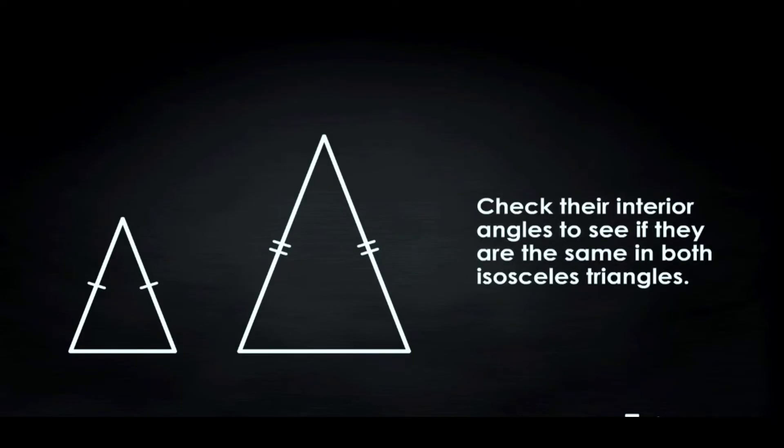Here we have two isosceles triangles, one with sides twice as long as the other. Are they similar? To determine if they are similar, you have to check their interior angles to see if they are the same in both isosceles triangles. Recall that the equal sides of an isosceles triangle are called legs. In this case, the corresponding angles between the legs and third sides are congruent at 71 degrees.